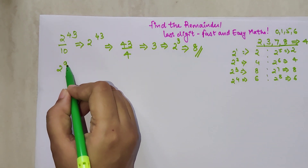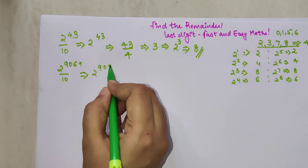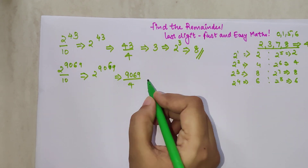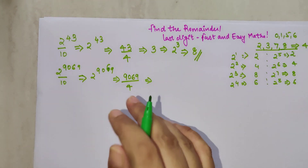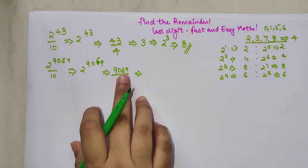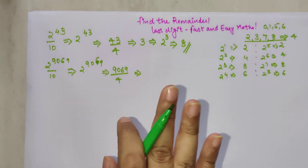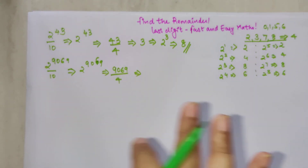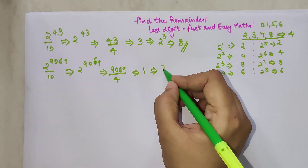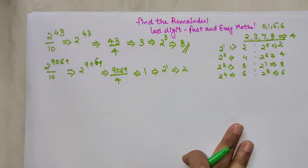Let's try another: 2 raised to 9069. What is the remainder when divided by 10? We just need to find the remainder of 9069 divided by 4. Using the divisibility rule for 4, we only divide the last two digits: 69 ÷ 4 gives remainder 1. So the final answer is 2 raised to 1, which is 2. That is both the remainder and the last digit.